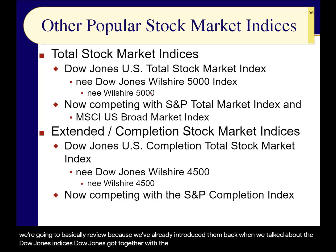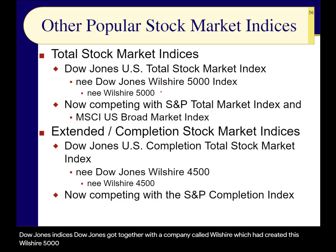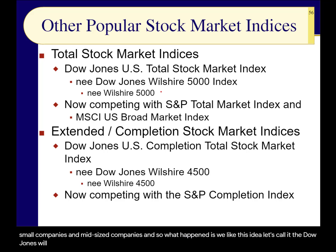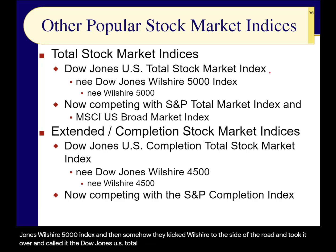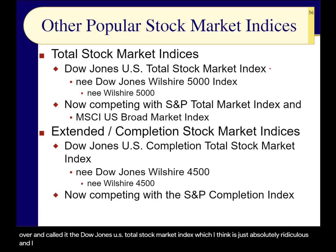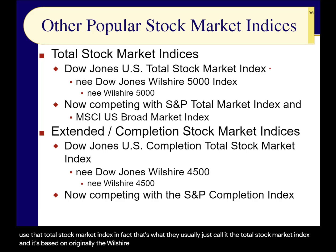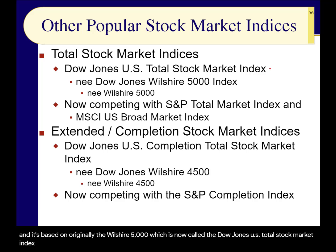Dow Jones got together with Wilshire, which had created the Wilshire 5000 — covering large, mid-sized, and small companies — because the S&P is mostly large companies. They called it the Dow Jones-Wilshire 5000 index, and then somehow Wilshire got pushed aside and it was renamed the Dow Jones US Total Stock Market Index, which I think is absolutely ridiculous. But many index funds use that total stock market index, so you need to be able to identify it. And of course there's also a version from MSCI, which we'll look at in a bit.